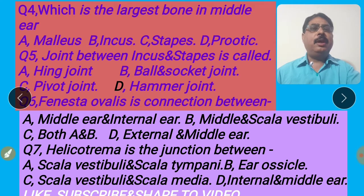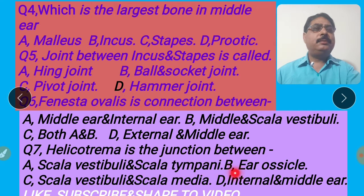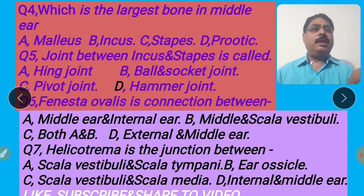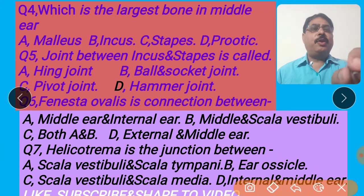Next question: Helicotrema. Helicotrema is the junction between — scala vestibuli and scala tympani; B, ear ossicles; C, scala vestibuli and scala media; D, internal and middle ear. Helicotrema is a pit present between scala vestibuli and scala tympani. So the right answer is option A. I shall click option A for the right answer.